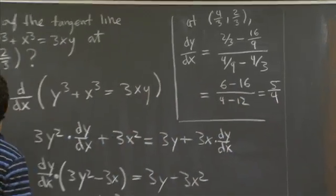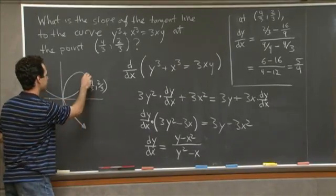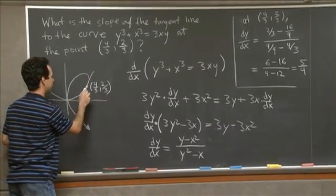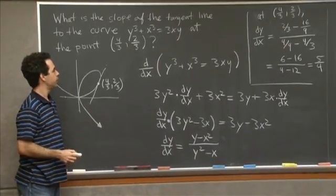And if we go back to the picture that I drew, it actually looks pretty reasonable over here, right? This slope of this tangent line is actually a little bit bigger than 1 there. Great, so that's that.